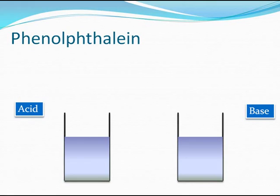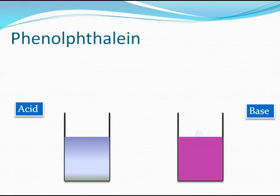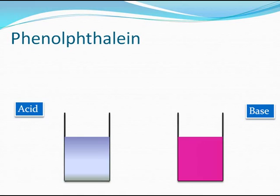Yet another famous indicator is phenolphthalein. Phenolphthalein is normally colorless. When dropped in an acid, phenolphthalein does not change color — it remains colorless. But when added to a base, it turns pink. So phenolphthalein is colorless in an acid but pink in a base. These are the three famous indicators — litmus, methyl orange, and phenolphthalein — and you must remember what colors they show in acids and bases.